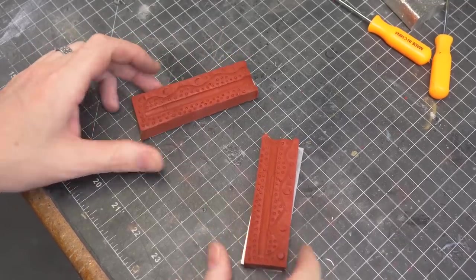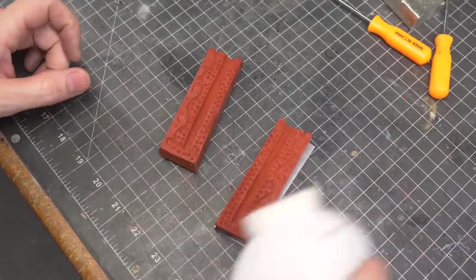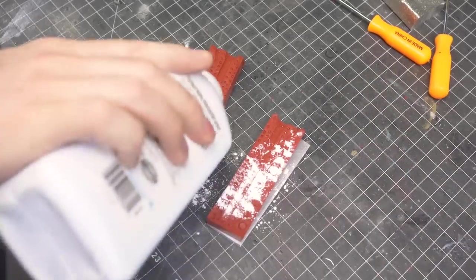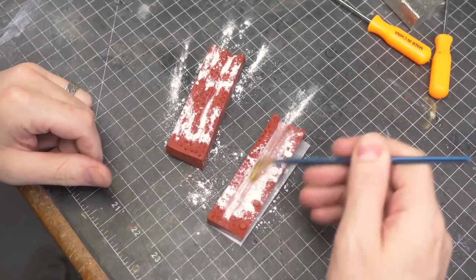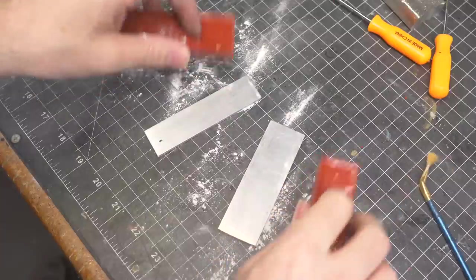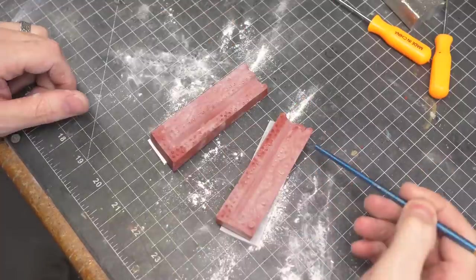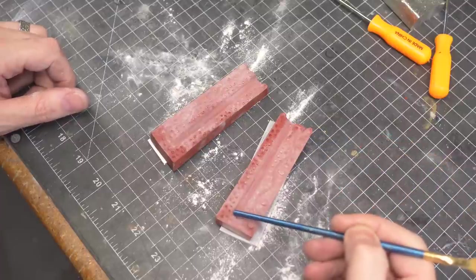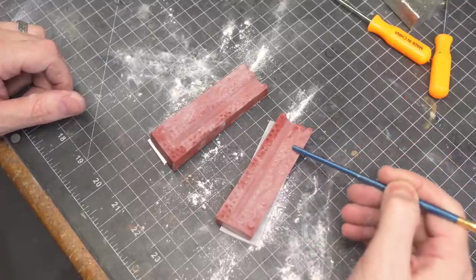While the pewter is heating up, I can prep my mold here. I'm just gonna put a little bit of baby powder on the mold and then brush it in there, make sure it's in all the nice details. Quick note: I have an air vent cut in, so I'll pour the molten metal down here and there will be room for air to escape.